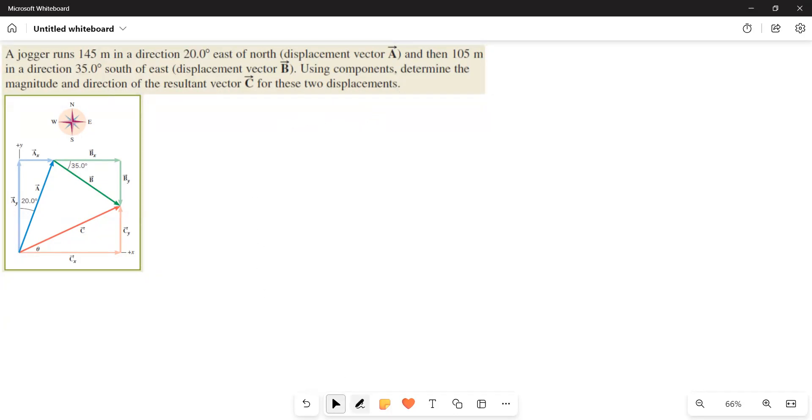Let me explain the problem to you, then we will do the problem. The jogger is running 145 meters, 20 degrees east of north. That is represented with the blue line here.